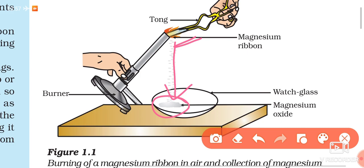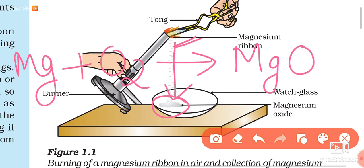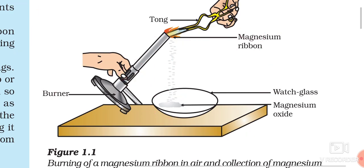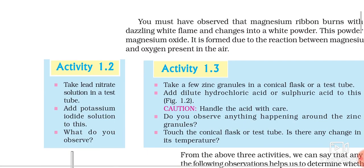The magnesium ribbon burns with a white and dazzling flame and the ash is collected in the watch glass. You can identify that a chemical reaction is taking place by the shortening of the ribbon, the appearance of light, and a change in temperature. What actually happens is that magnesium, a metal, reacts with oxygen to form magnesium oxide — a different substance. This is a chemical reaction.